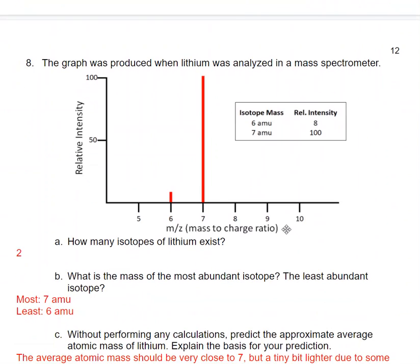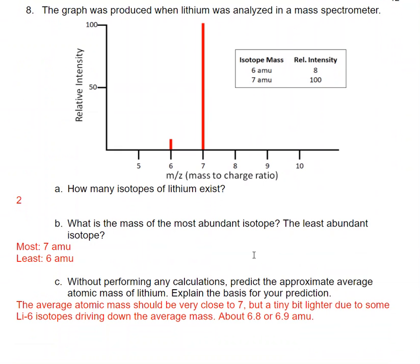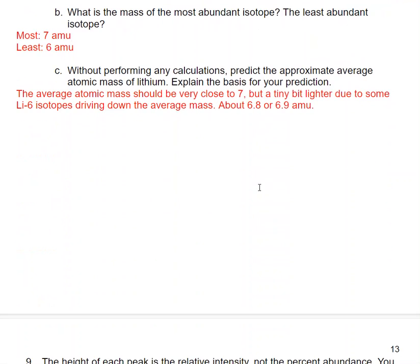In question eight, we're looking at the mass spectrum for lithium. And we see that there's two isotopes from two peaks, and we see that the peak at 7 amu is way more abundant than the peak at 6 amu. So based on this relative abundance in the mass of these isotopes, I would guess that the average is going to be pretty close to seven, but a tiny bit lighter due to some of the lithium-6 isotopes driving down the average mass. So I would say about 6.8 or 6.9 amu.